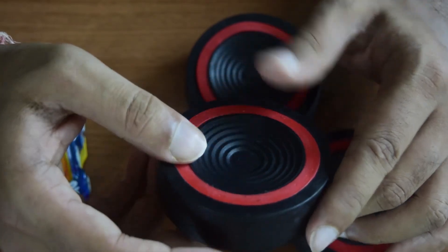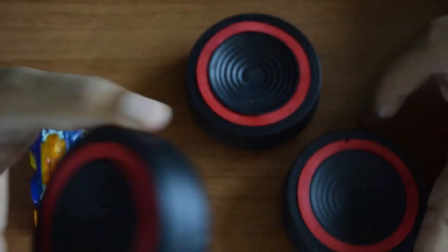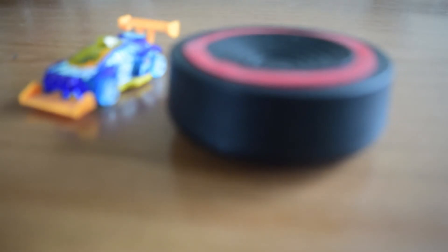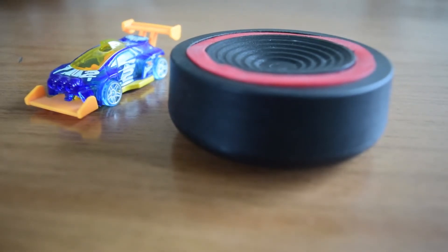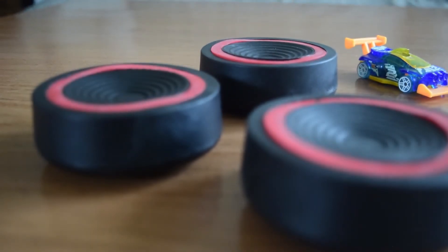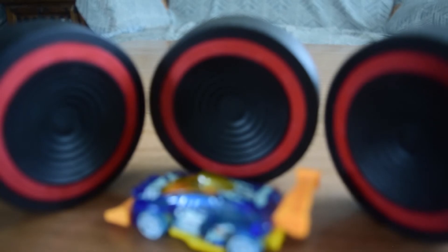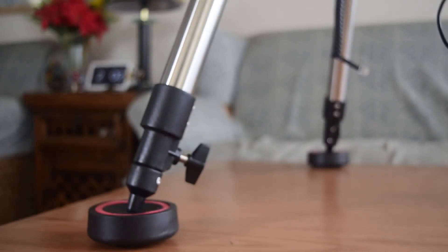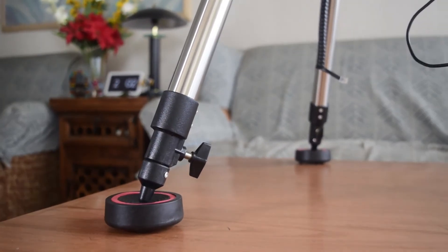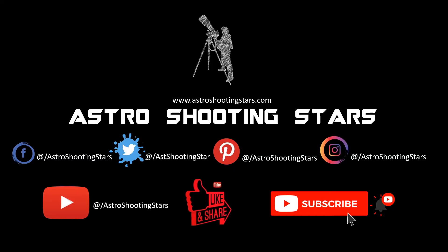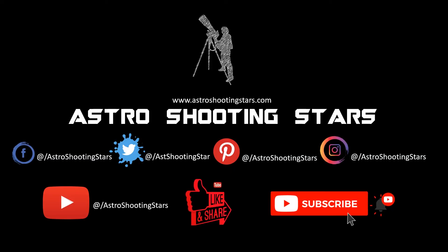So this is it. This is the unboxing of Solomark anti-vibration pads. I highly recommend this for any astrophotographer that has an electronic mount or a tripod, or even when you are manually operating your telescope. This will reduce the vibration for any telescope that you have. If you like this video, please hit that like button. If you are not yet subscribed to my channel, please hit that subscribe button and click that bell icon to get notifications for all my new videos. Thank you guys, thanks for watching, and clear skies.